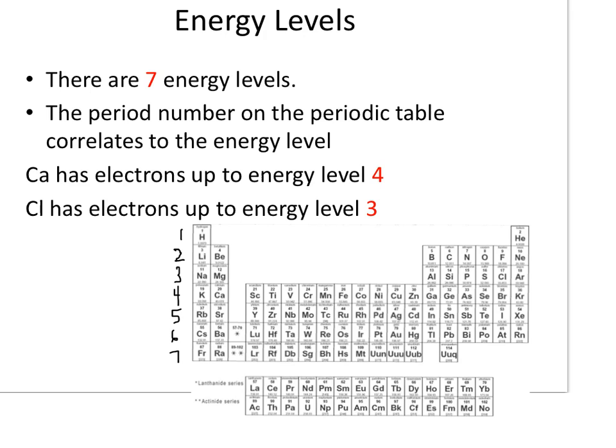The lower two rows actually go with the sixth and seventh row — this is still part of the sixth period, and this is part of the seventh period. For example, calcium is in the fourth energy level, so it will have electrons up to the fourth energy level. Chlorine will have electrons up to the third energy level, because it is found in the third row.